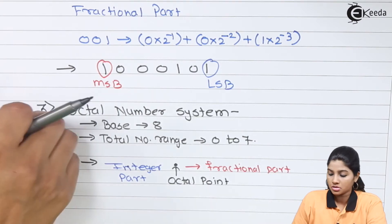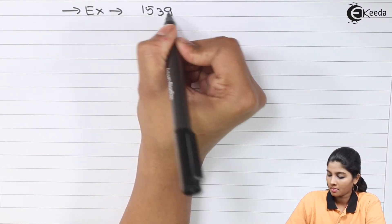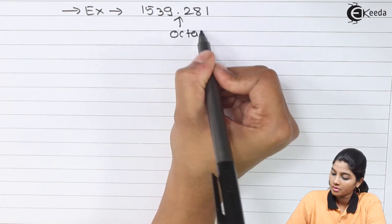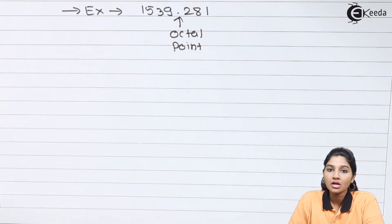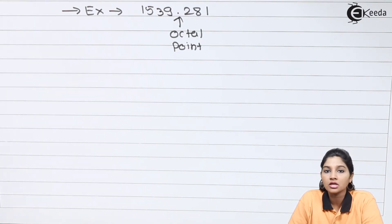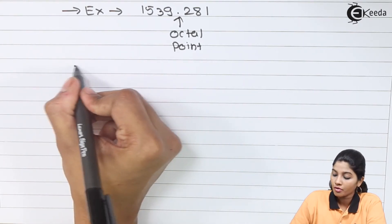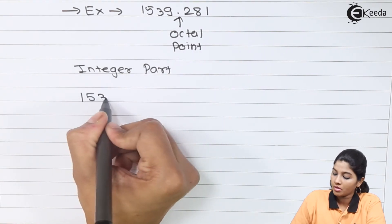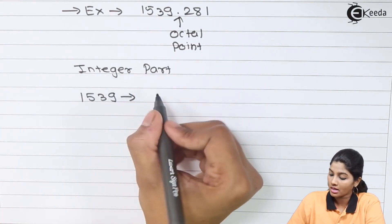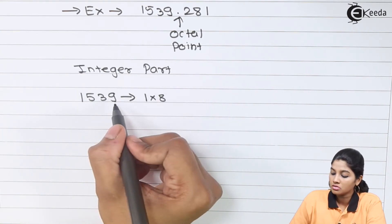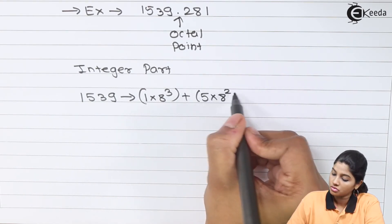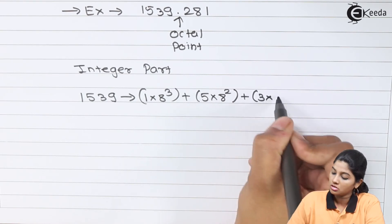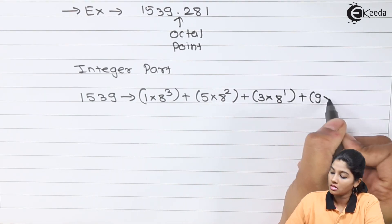Let's take an example of the octal number system. Every integer and fractional part has a specific weight in terms of powers of 8 — that is, 8 raised to 0, 8 raised to 1, 8 raised to 2, 8 raised to 3, and so on. So for the integer part 1,5,3,9, it is mathematically represented as 1×8³ + 5×8² + 3×8¹ + 9×8⁰.